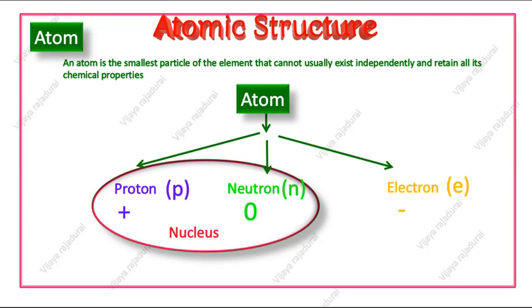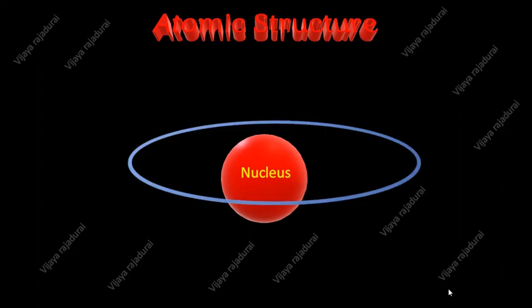After more discussion, Niels Bohr finally concluded the electrons will be revolving around the nucleus in discrete orbits. Here you can see the animation of atomic structure. This is the nucleus, the core of an atom. This is an orbit. Here the electron is revolving around the nucleus in an orbit.